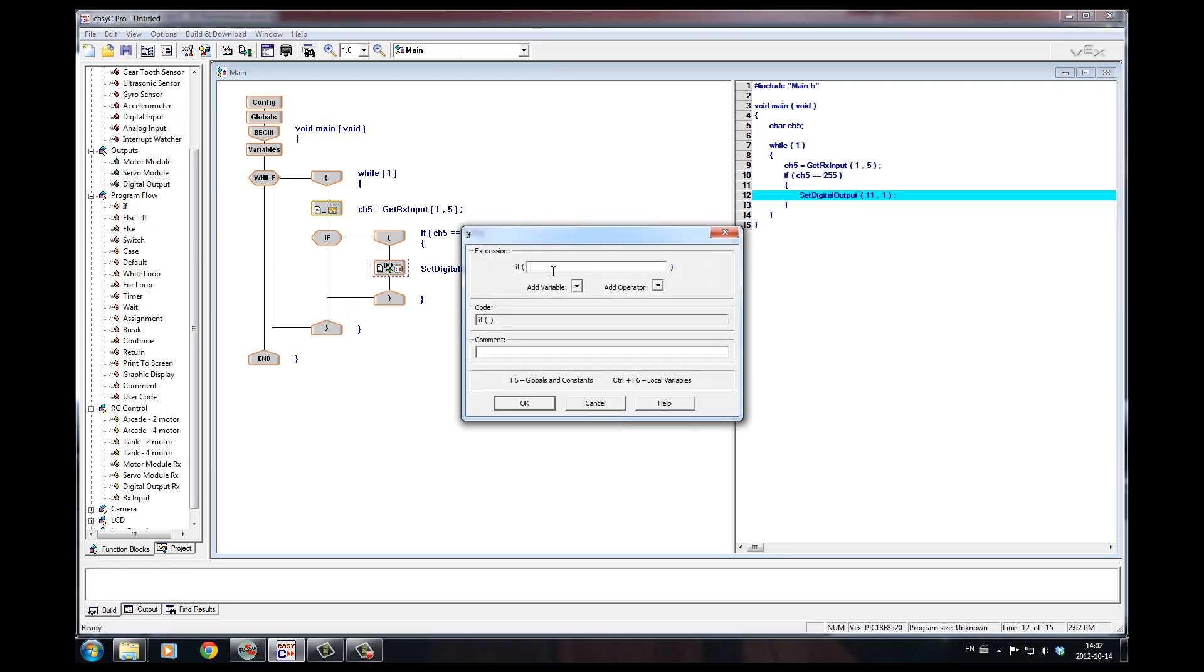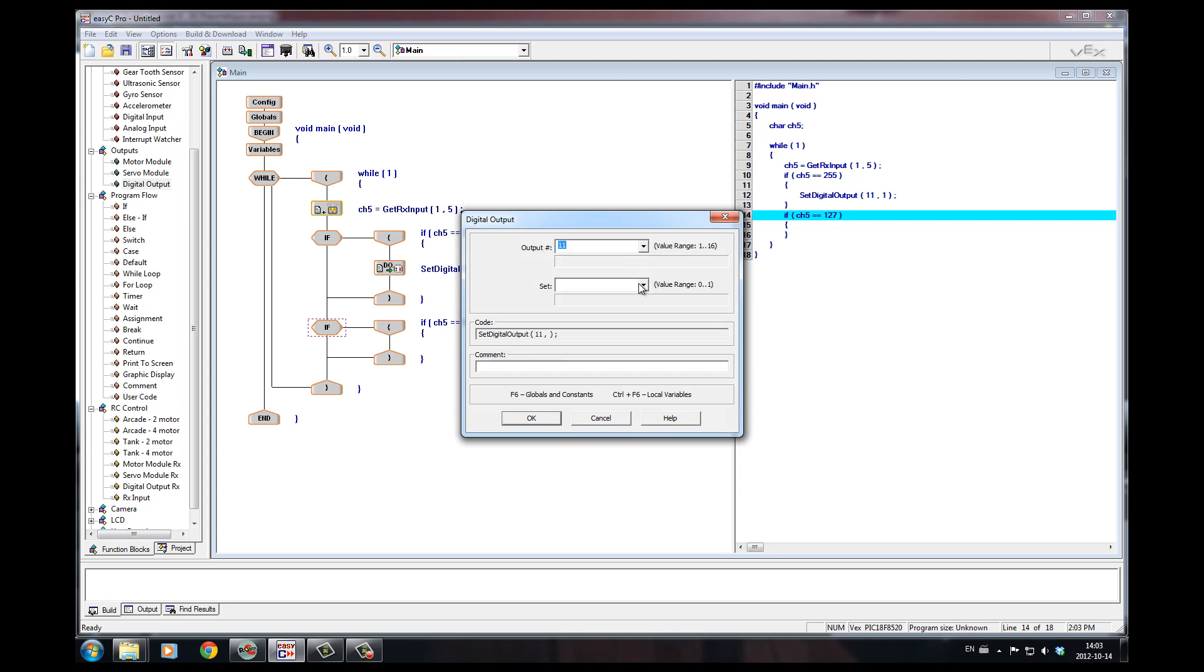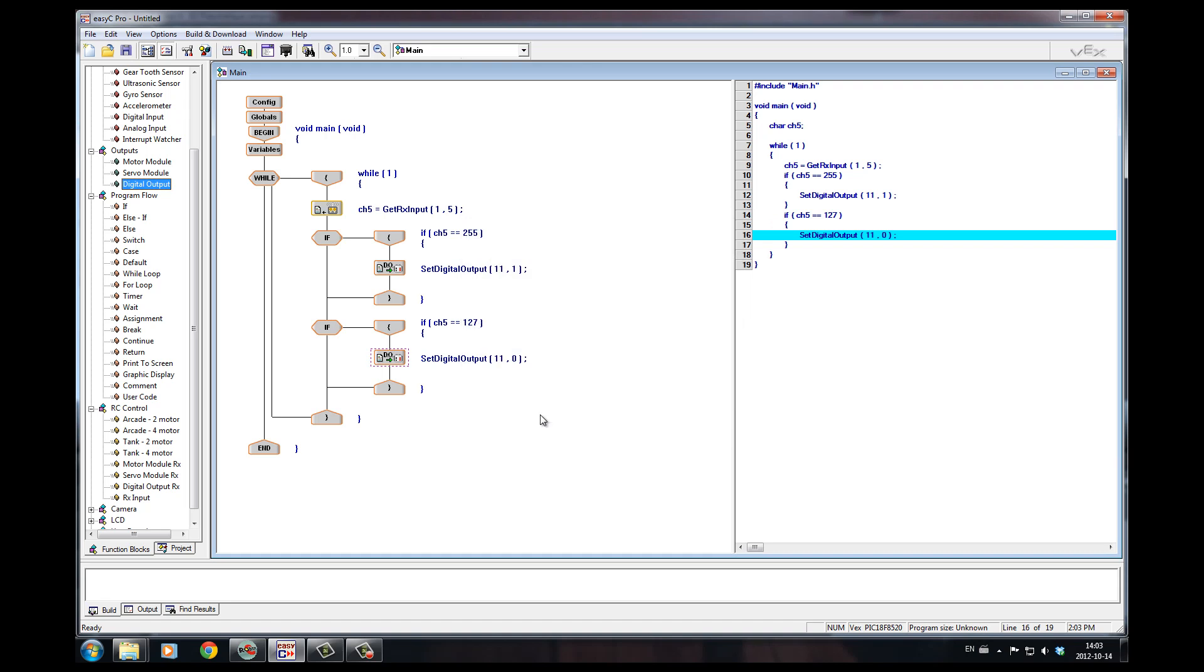However, if I want to close the double action piston, I need to use another conditional statement. If channel 5 is equal to the other button, or I could say if no button is pressed. So 127 is the value of no button pressed. In this case, we'll set the digital output of 11 to 0. And it's not more complicated than that. If I press on the button associated with 255, it opens. If I press on nothing, it closes.